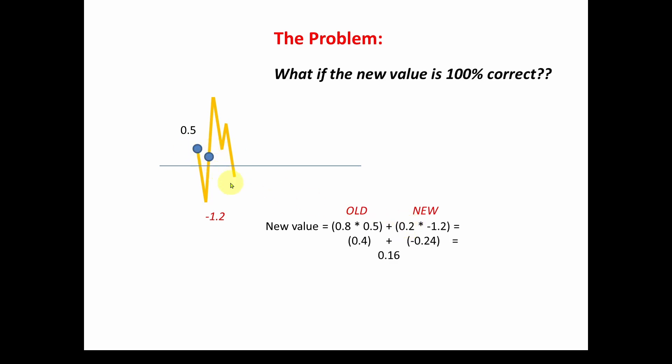By taking 20% each time, it's going to be quite a while before we get to the actual minus 1.2. By using this low pass filter, you're including a time delay that you may or may not want to get to the right value.